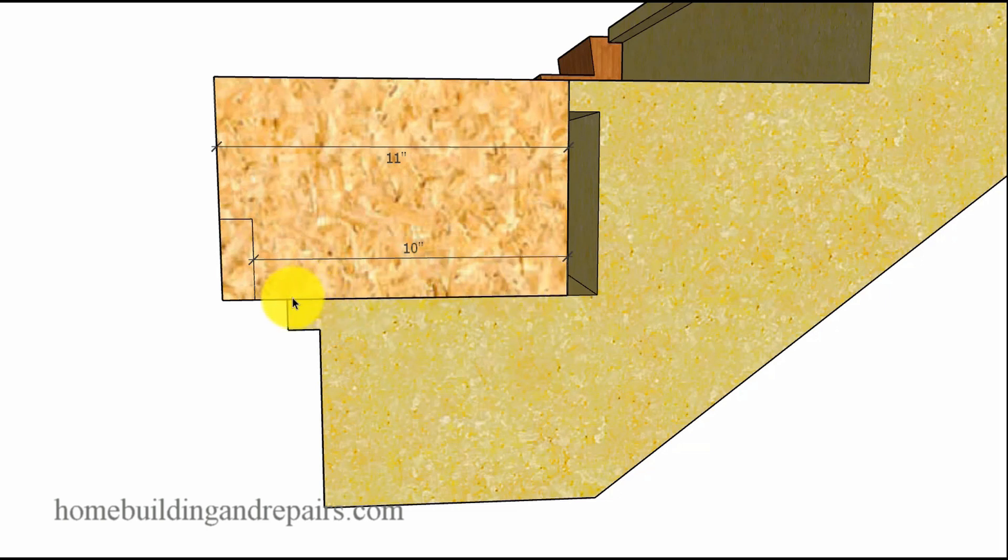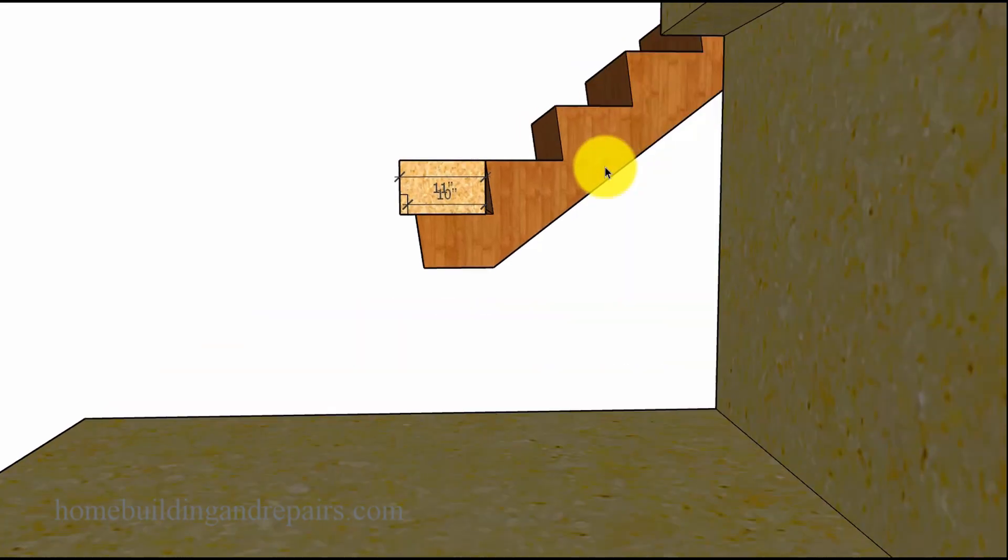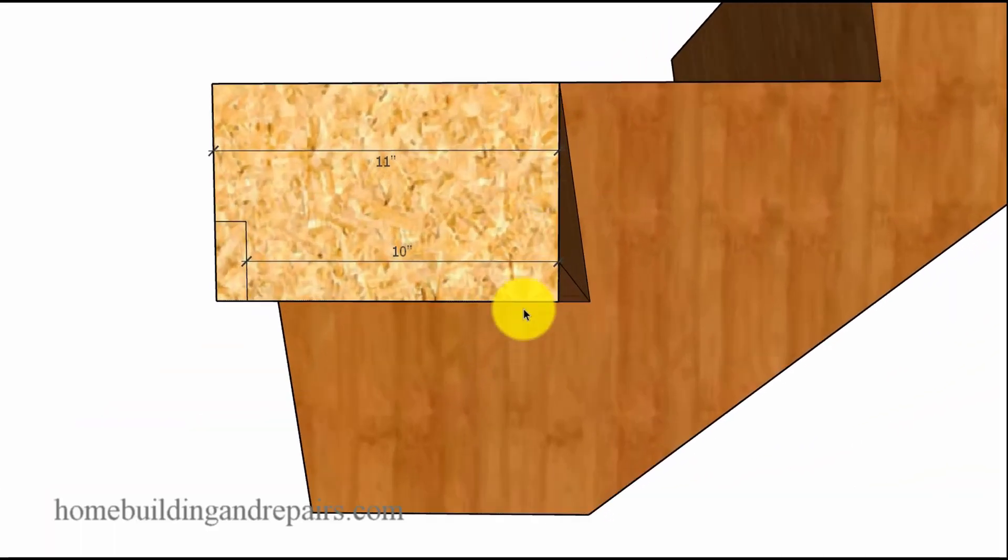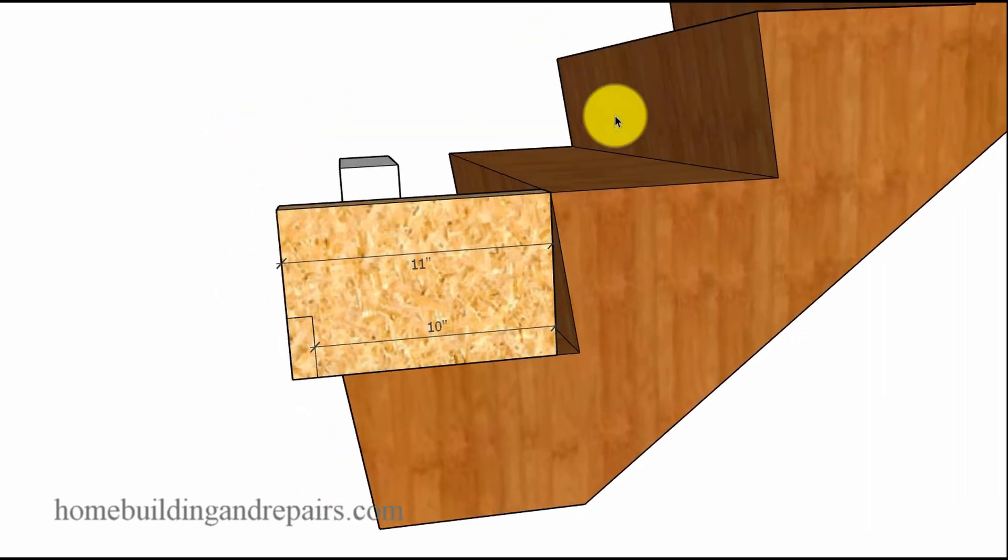So here we have a nine inch stair tread with a one inch overhang. Again, this is probably something that's not going to make your building department happy. And here we have a nine inch step with a one inch cutback.